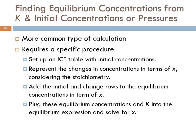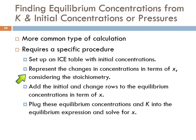The other type of calculation is more common, and we need to use an ICE table — a specific procedure. We're going to set up an ICE table with the initial concentrations, because that's what this sort of problem has — initial concentrations or pressures. Remember, if it's all gases, we can use pressures instead. We're going to represent the changes in concentrations in terms of X, considering the stoichiometry of the chemical equation. Then you take the initial and the change rows and add them together to get the equilibrium concentrations in terms of X. You put those into the equilibrium expression along with K, and you solve for X.